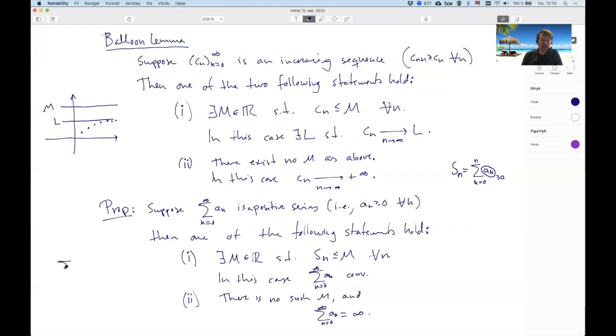This is different than, for instance, the Grandi series that we have seen in the course, which looks like this. So he is divergent, but he does not diverge to infinity. And this can happen because the terms are both positive and negative.